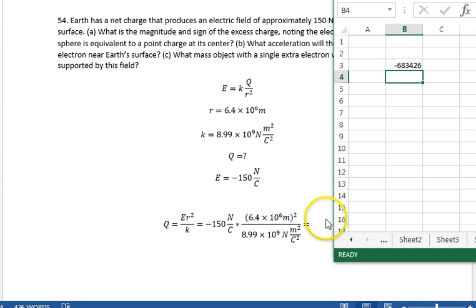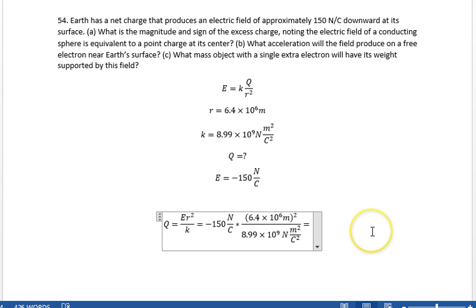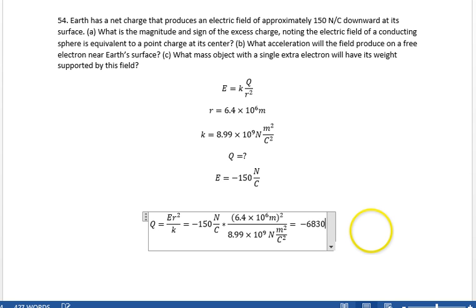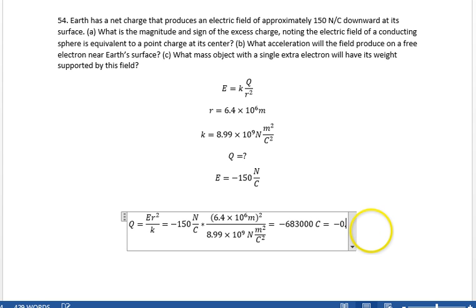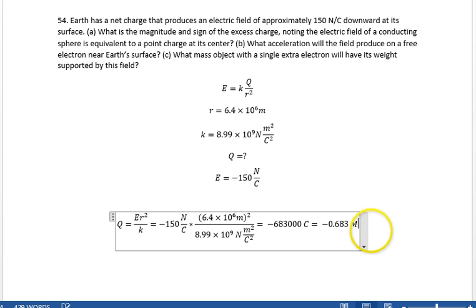Or minus 683 kilocoulombs, or minus 683,000 coulombs, is minus 0.683 megacoulombs.